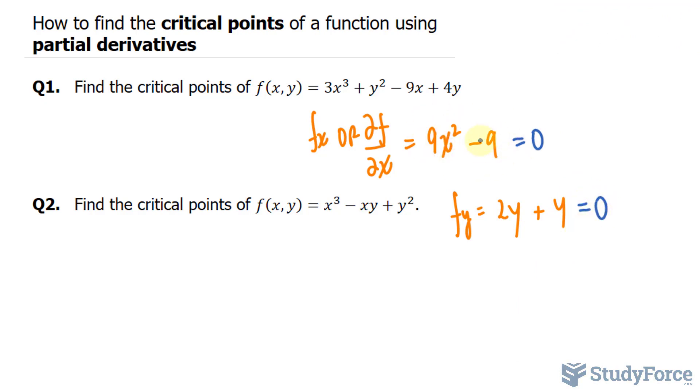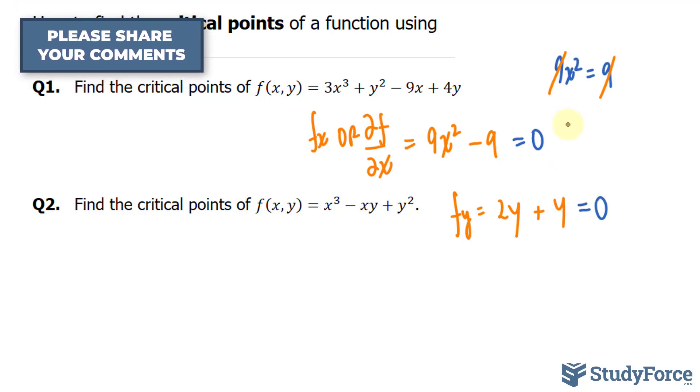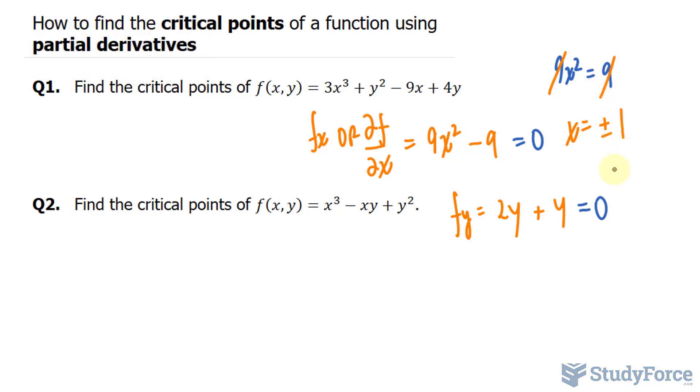Solving for x here, I'll bring this negative 9 over to the other side, where I end up with 9x squared is equal to positive 9. Dividing both sides by 9 cancels out the 9s. So that becomes a 1, and so does that. And then we square root both sides, where we have x is equal to plus minus the square root of 1, which is 1.